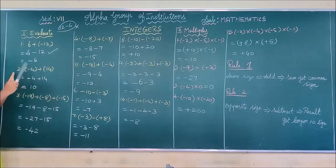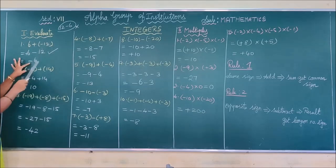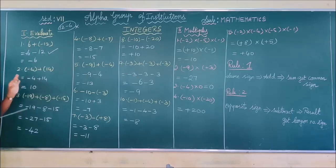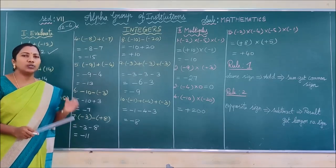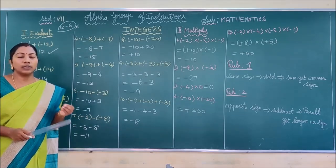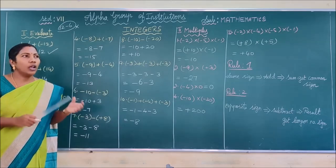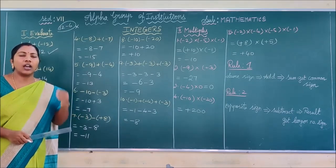Suppose this question is given as multiplication. Then: plus into minus gives minus, and you multiply 6 with 12: 6 twos are 12, giving minus 72. Before answering any question, I am insisting: you must have a clear idea about whether the operation is addition, subtraction, multiplication, or division. You must be clear about the operation, and then apply the rules.